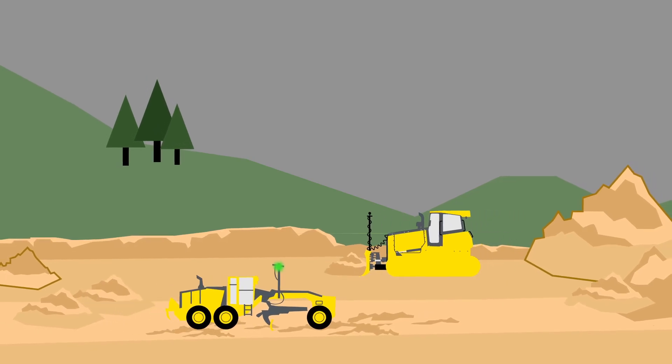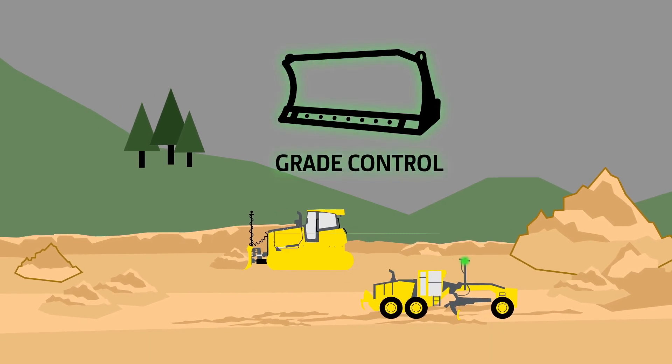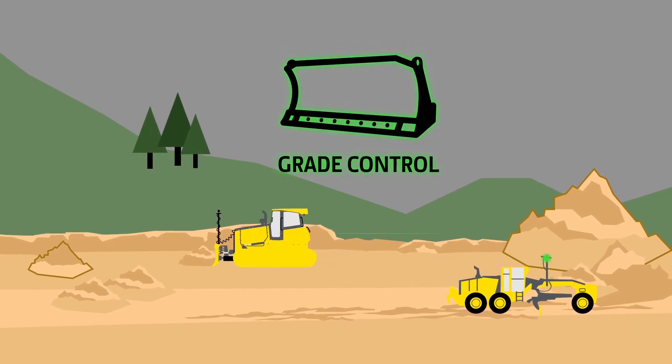If you want to grade faster, more precisely, and with less manpower, pairing a grade control system with a John Deere crawler dozer or motor grader is a no-brainer.